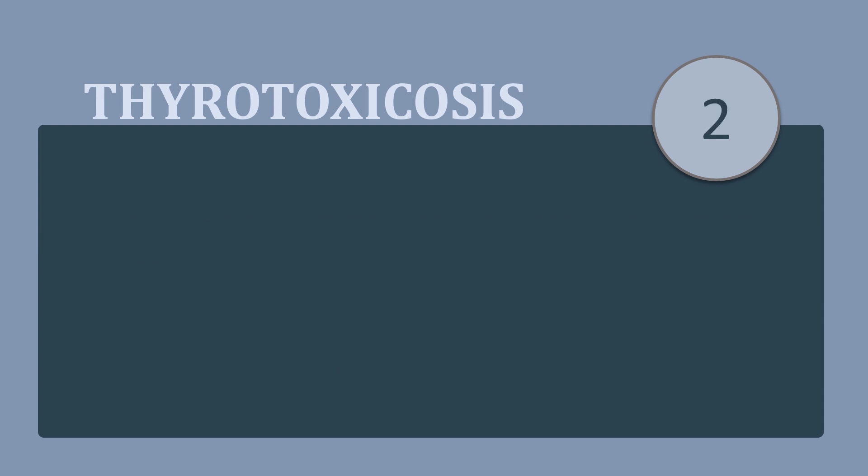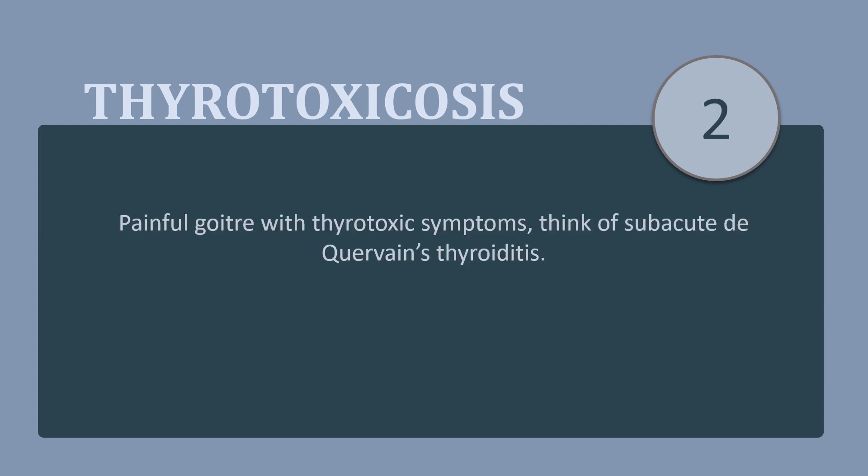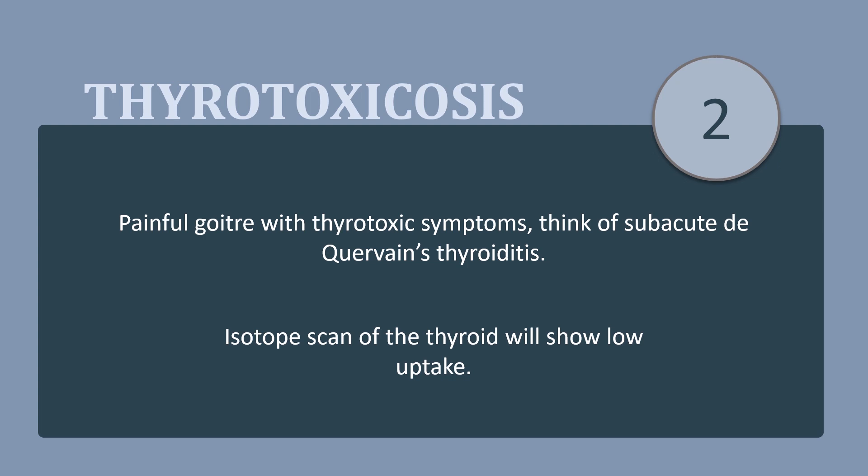Pearl 2: If there is a painful goiter with thyrotoxic symptoms, think of subacute de Quervain's thyroiditis. Unlike other causes of thyrotoxicosis, an isotope scan of the thyroid in this condition will show low uptake.